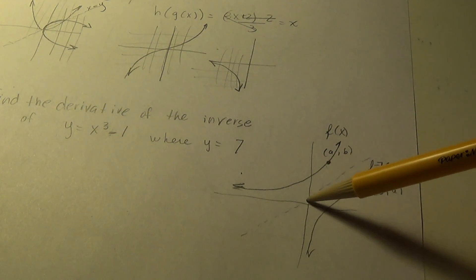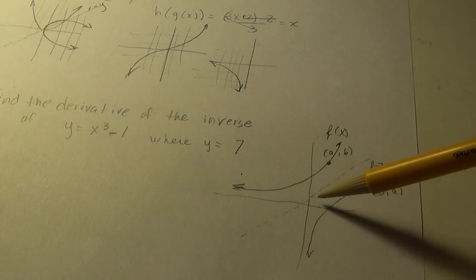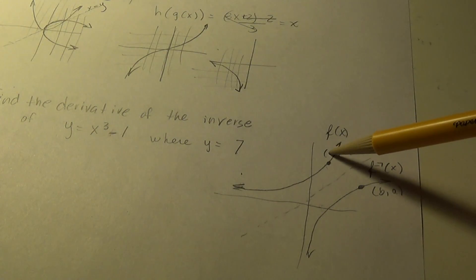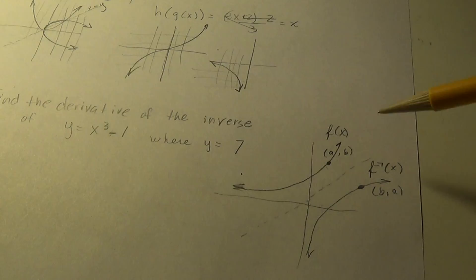So, if, say we went over 2 and up 5 to get to this point, 2 comma 5, then it's guaranteed, on the inverse function, the point 5 comma 2 will exist.